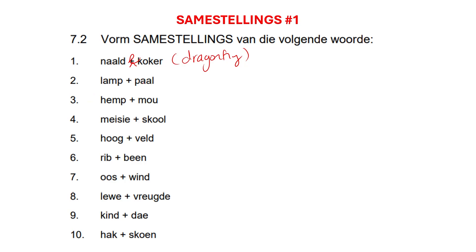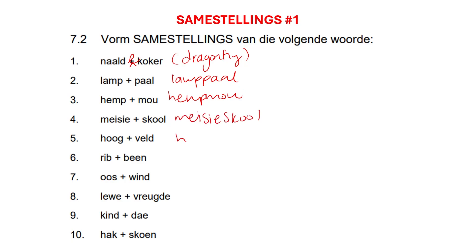'Lamp' and 'pal' — you literally just put them together, so it will be 'lamppal'. 'Hemp' plus 'mo' — you just put it together: 'hempmo'. 'Meisie' plus 'skool' — you just put the two together: 'meisieskool'. 'Wig' plus 'veld' — you just add them together: 'wigveld'. 'Ribbyn' — you just add them together: 'ribbyn'. It's literally just a samestelling.